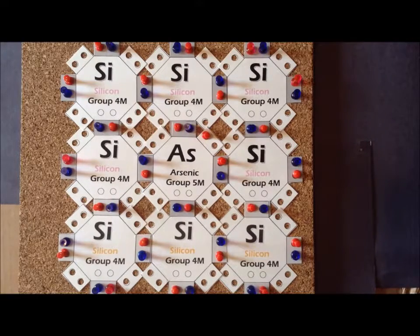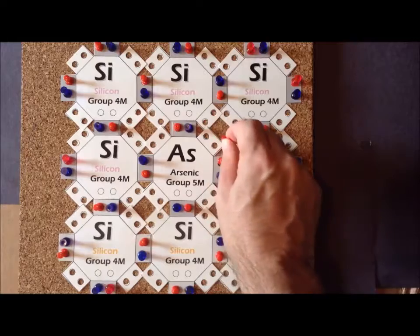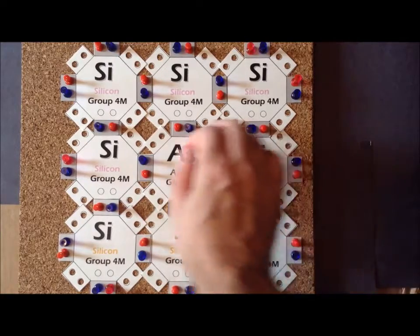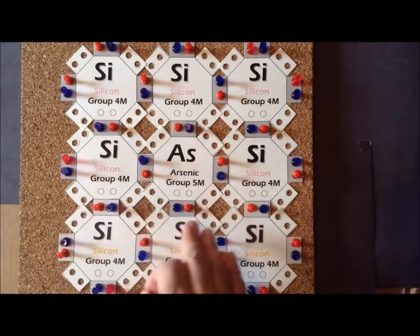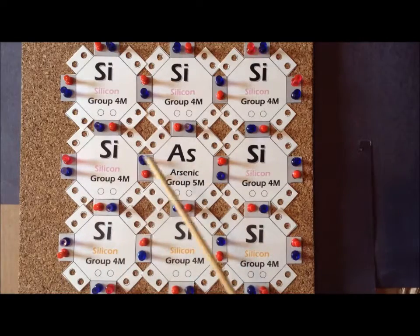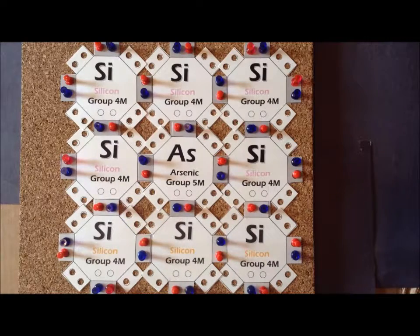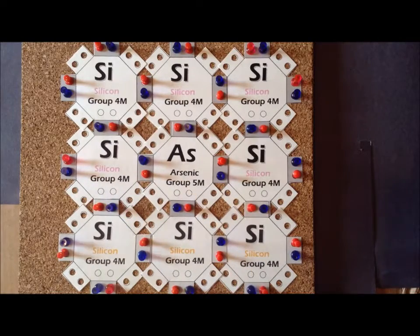So we have an electron, a negatively charged carrier, that is free to move throughout the crystal. It will not form any one of the bonds because each of the bonding orbitals is already completely full in the valence band. The only open locations are in the conduction band.